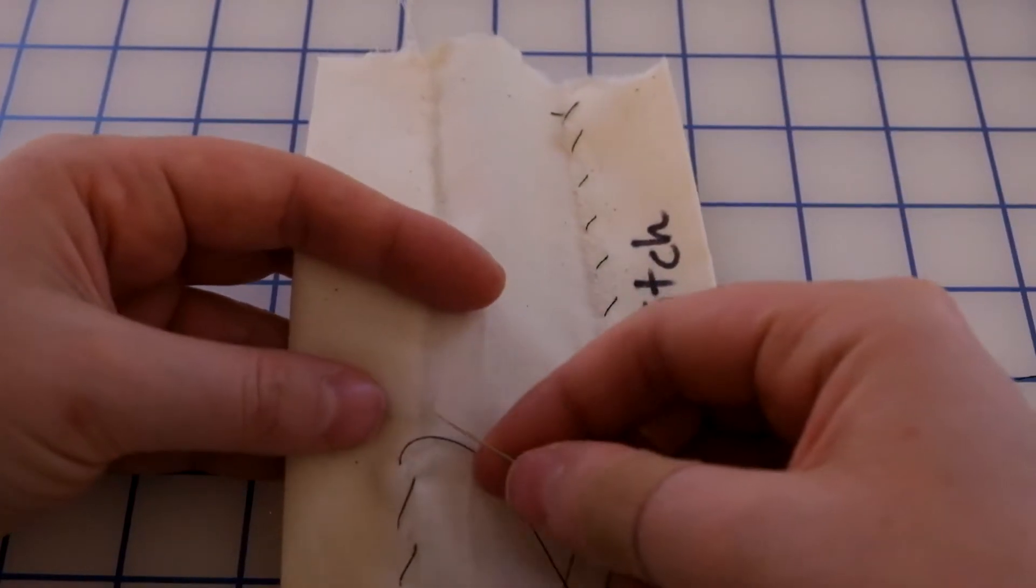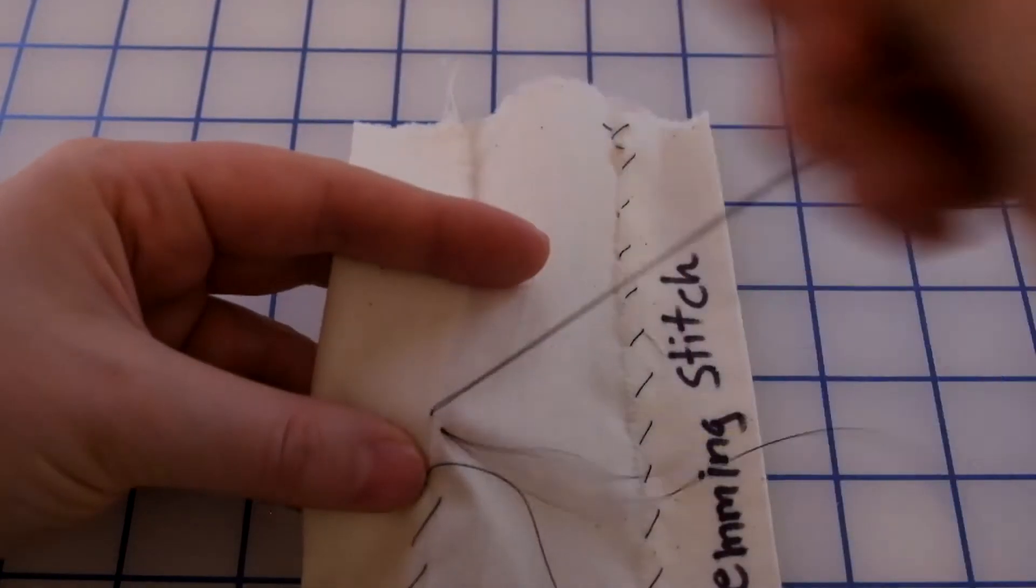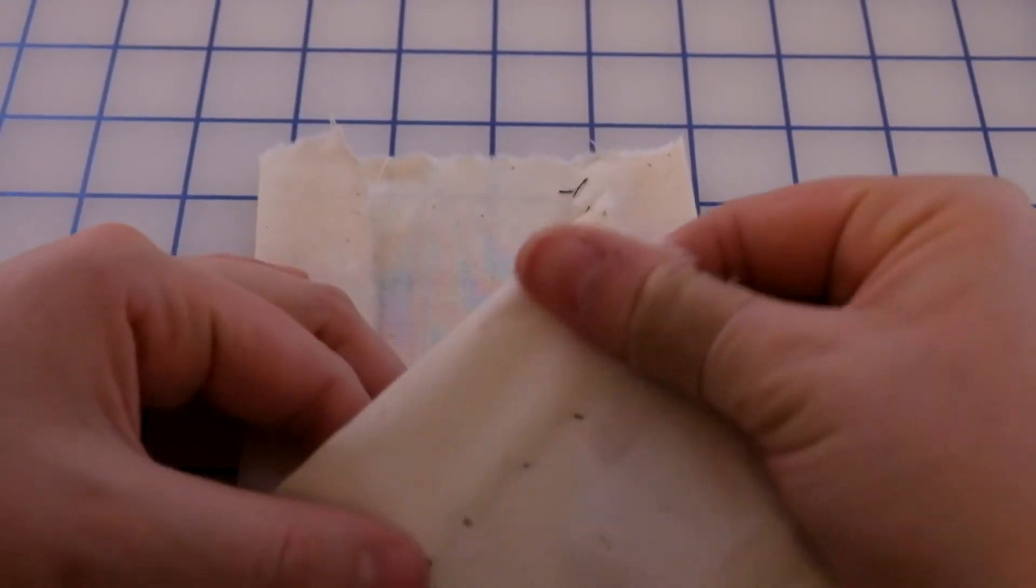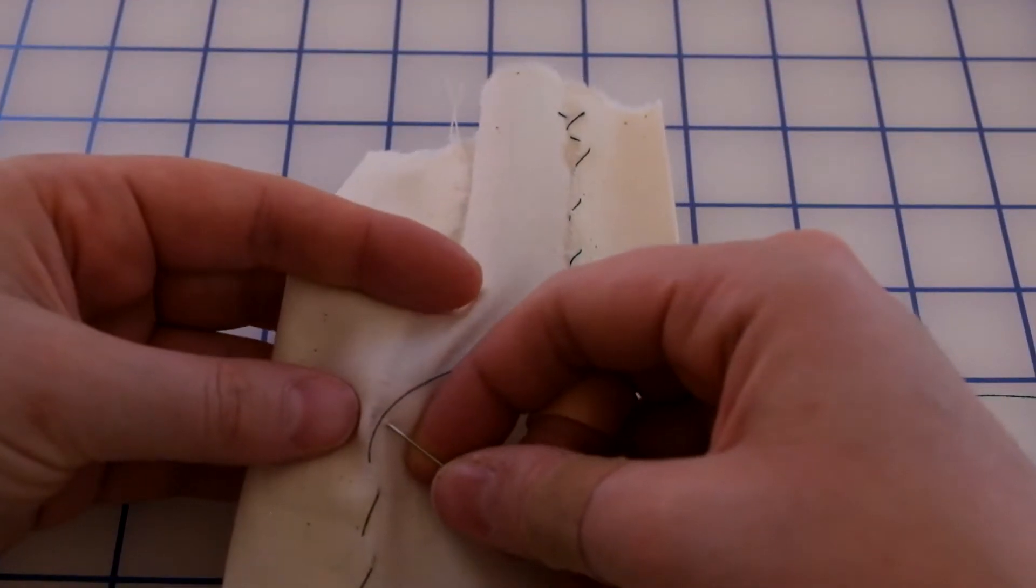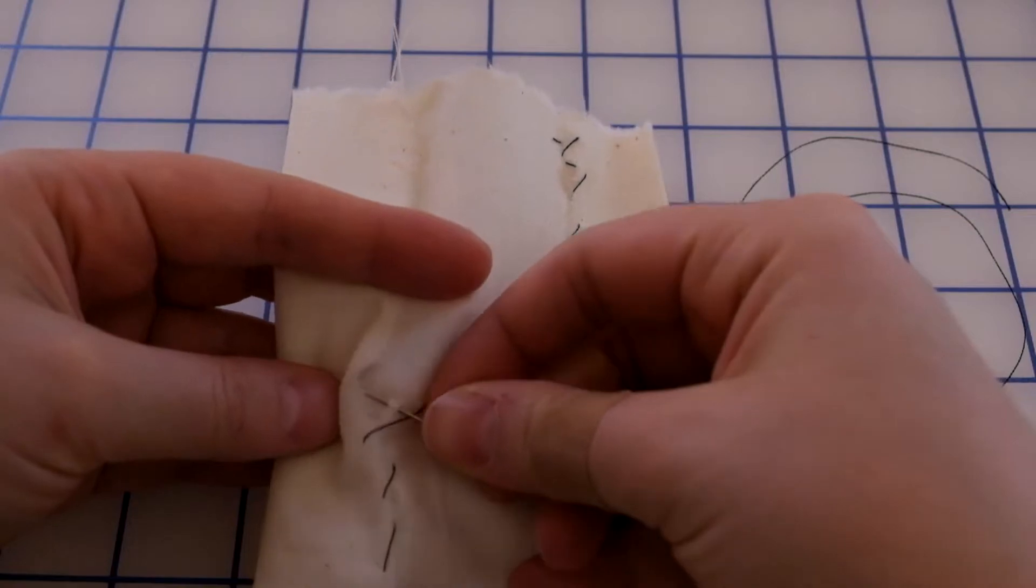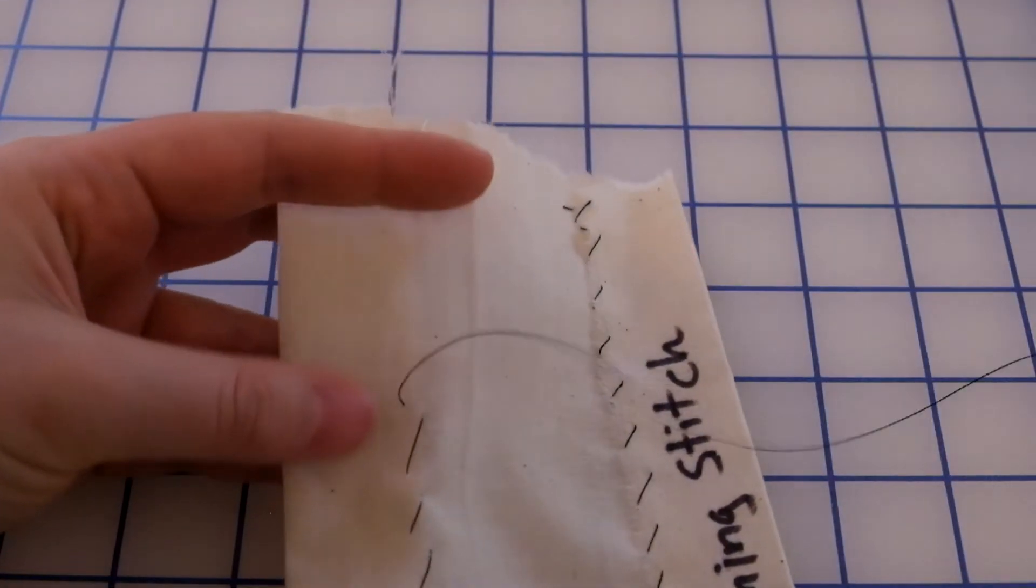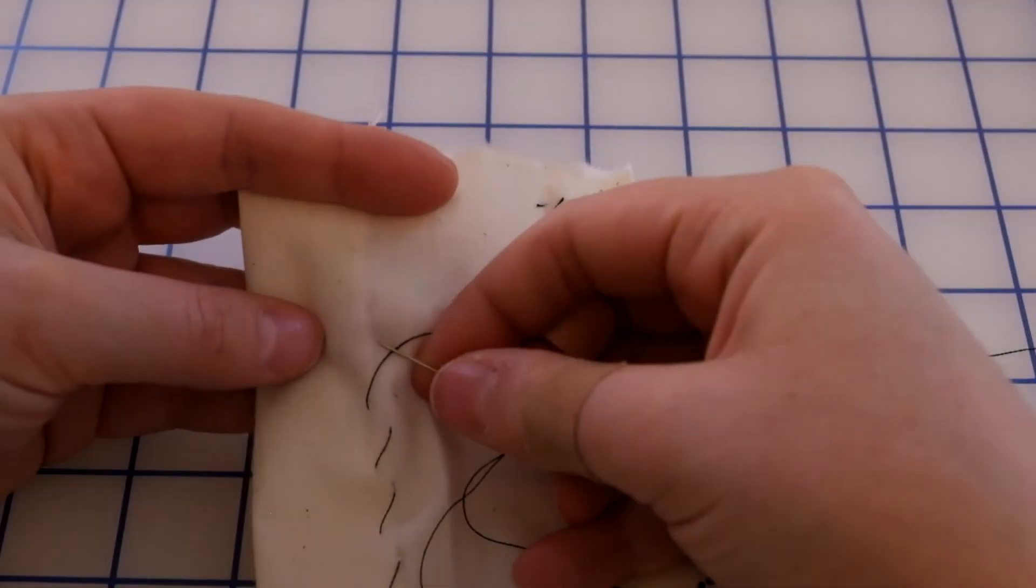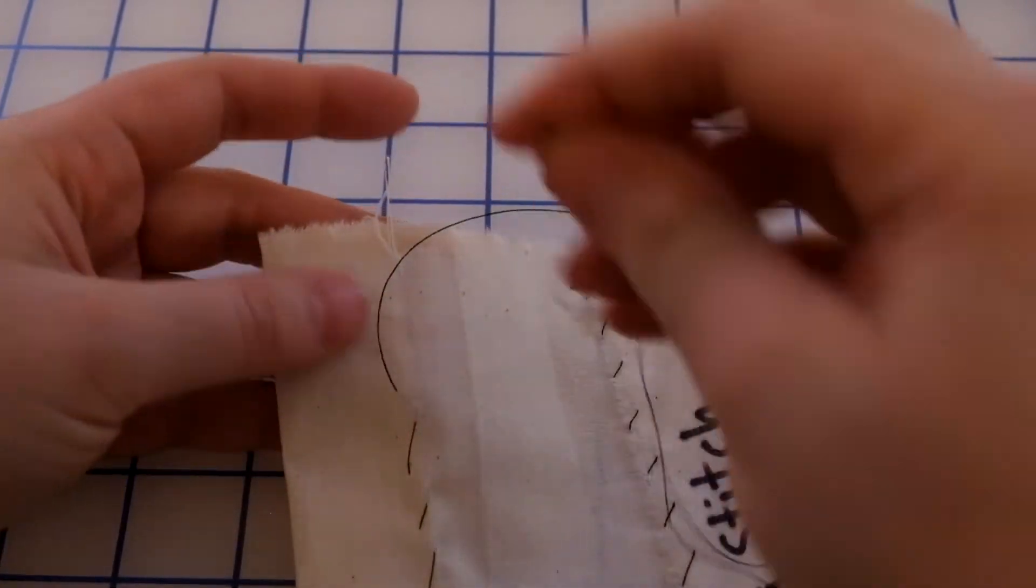The stitches should be about a quarter of an inch to three-eighths of an inch apart, and you don't want to pull too tight. You want to leave it so it's nice and flat, and that'll help keep the stitches on the front more invisible because there won't be as much of a pucker.